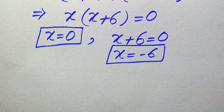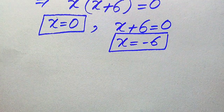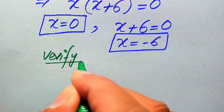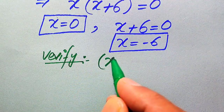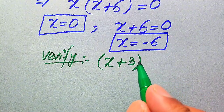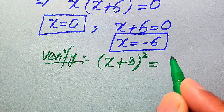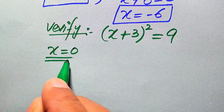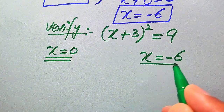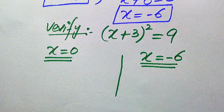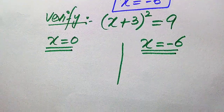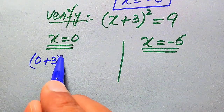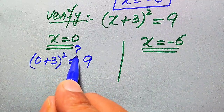Now we need to verify that both of these two values are solutions or extraneous roots. We copy down the given equation: (x + 3)² = 9. On one side we verify x = 0 and on the other side we verify x = −6. First we verify x = 0 by substituting into the left hand side: (0 + 3)² = 9 — this is our claim.